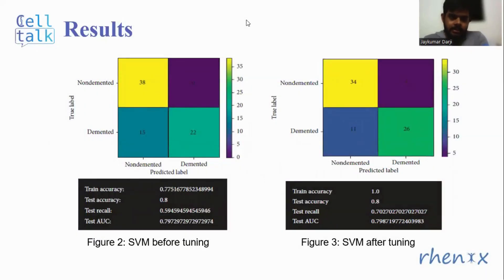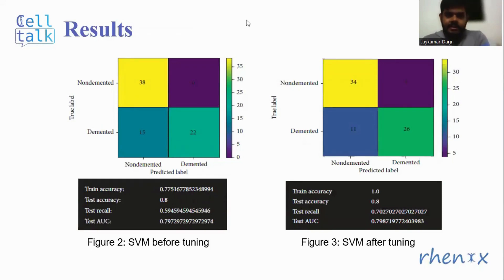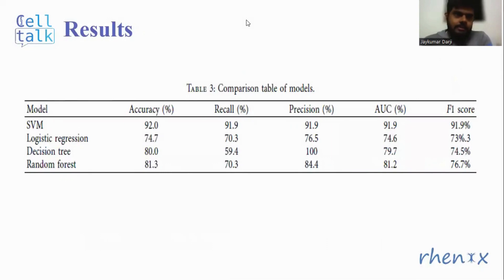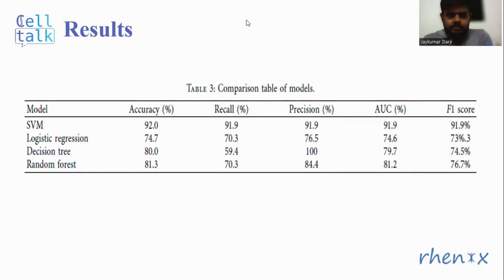Here you can see the confusion matrices for the developed SVM model before and after tuning the hyperparameters, which shows the testing and training accuracy, test recall, and test area under the curve. This is the table for comparison of all the trained models. It shows that SVM has performed better than all other models with 92% accuracy, and logistic regression has performed the worst with 74% accuracy.